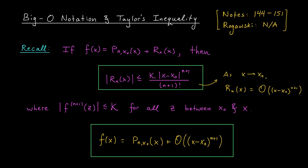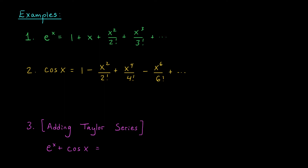Let's see some examples on the next slide. For our first example, consider the Maclaurin series of the function f of x equals e to the x. Maybe in this example we're only concerned with the precise values of the first three terms — the quadratic approximation of our function. The terms afterward aren't so important, but we do still care about the order of those terms. In this case, we can write our Maclaurin series much more compactly as 1 plus x plus x squared over 2 factorial, and then we add big O of x cubed. This is valid as x approaches 0.